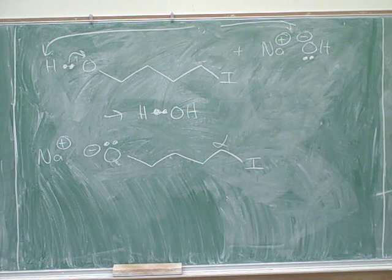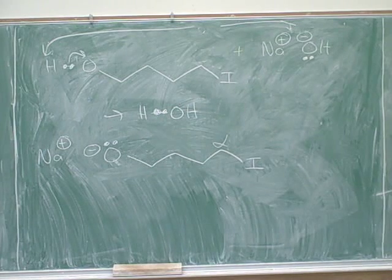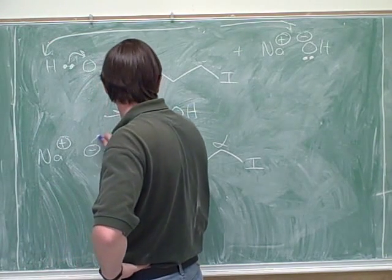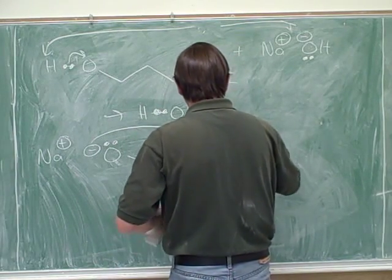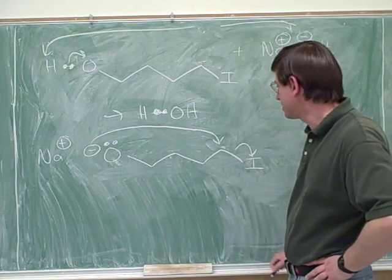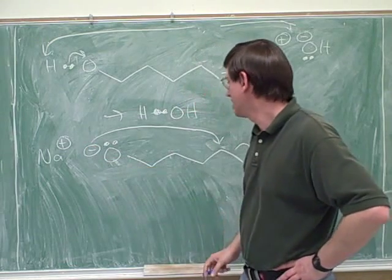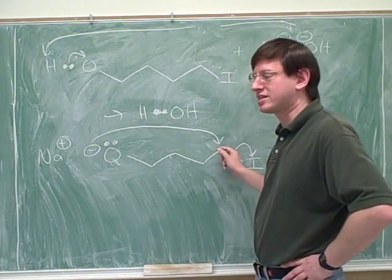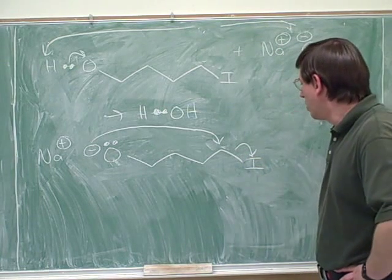All right. So let's try the electron-pushing arrows for that. The head should be pointing at the atom. So we should take these electrons here and put them over here. And then we go like this. This tail should be on the negative charge. That's the conventional place. This head should be pointing directly at this atom. This tail should be on the bond. And this head should be on the atom.